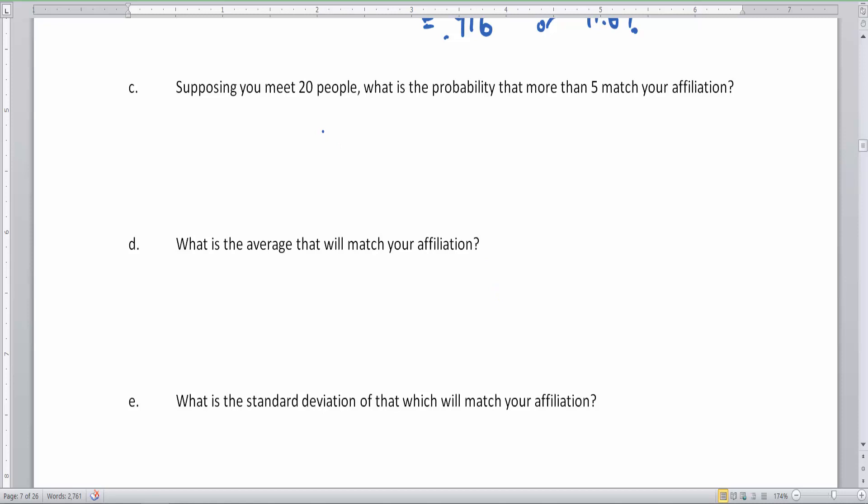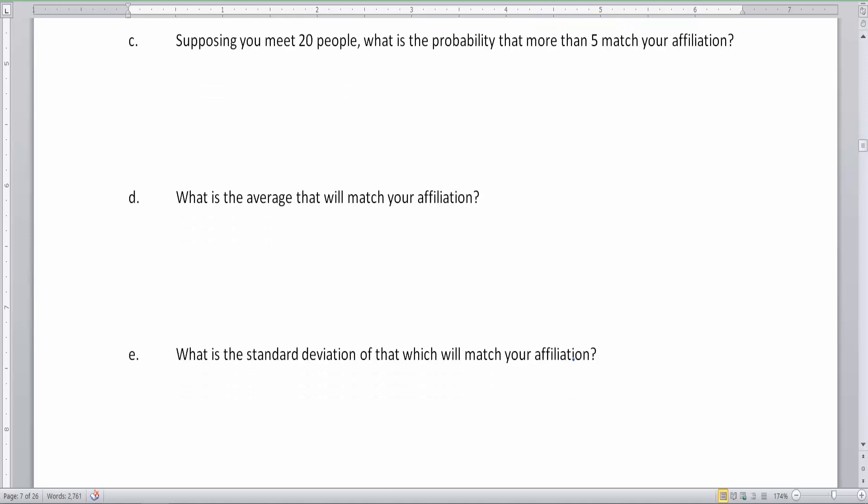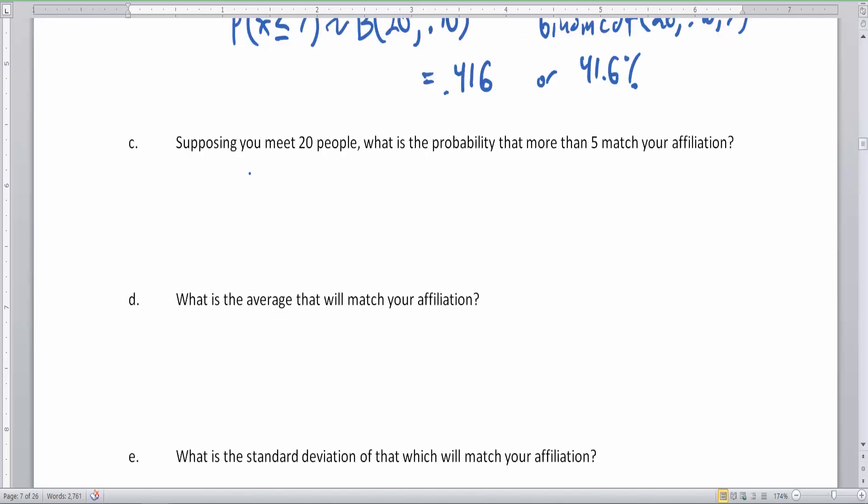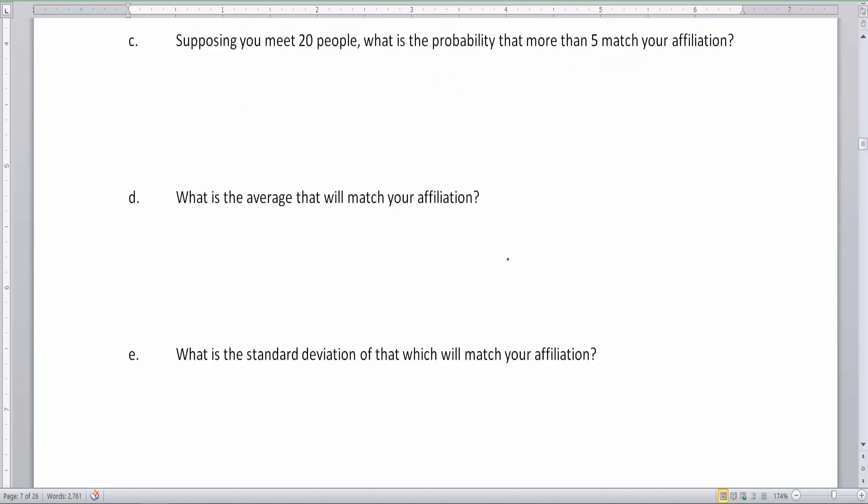Now check out this one here. This is one we're going to need to kind of figure this out. So at the end of video three, this is the puzzle, right? Because this is saying, suppose you meet 20 people. What is the probability that more than five match your political affiliation? Okay. Now the calculator doesn't do greater than. So what we have to think about is like, okay, what does it mean to be more than five? Okay. So more than five would be X greater than five.